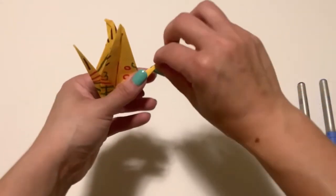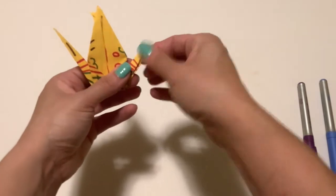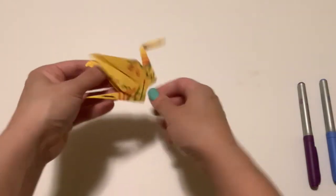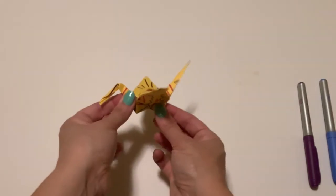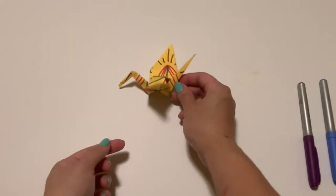For the part that you want to be the head you would just create an additional fold downward for the head. Then to finish it off you pull back the wings and you have your beautiful crane that we can now use in our collaboration out in the hallway.